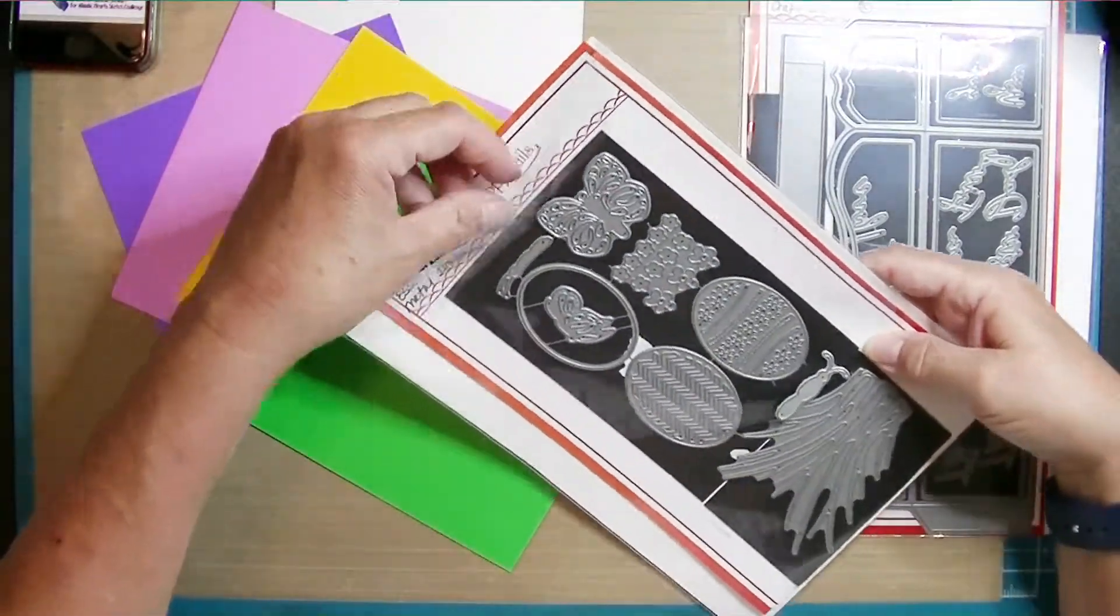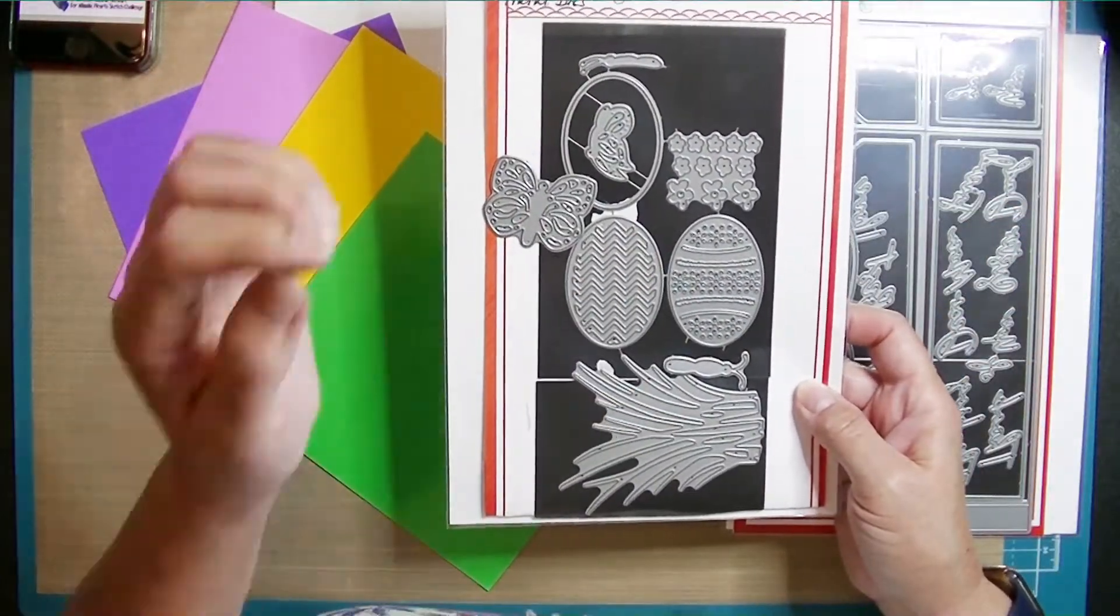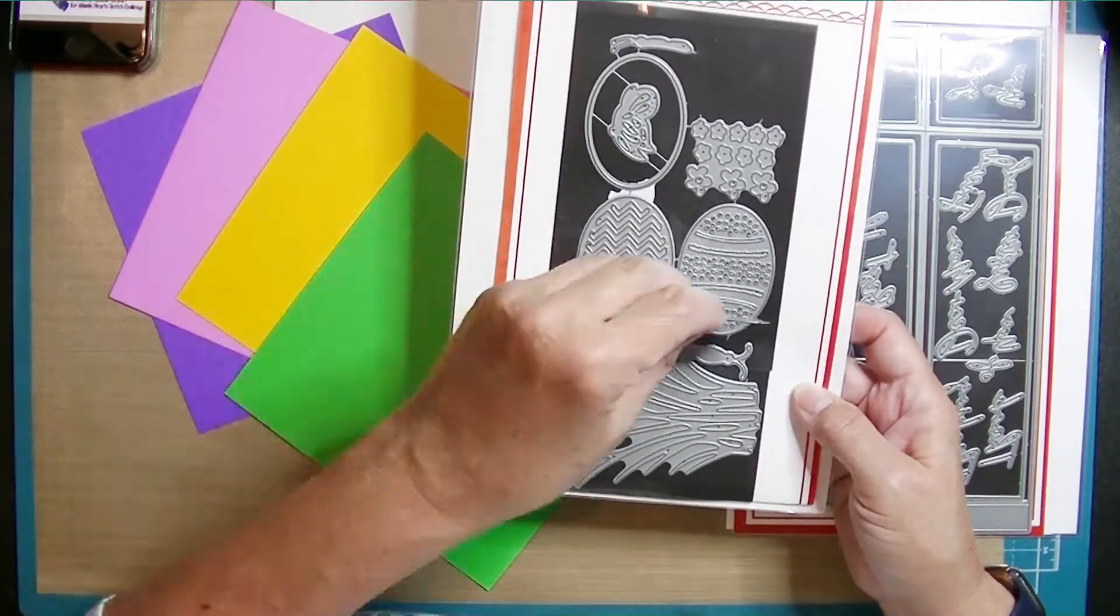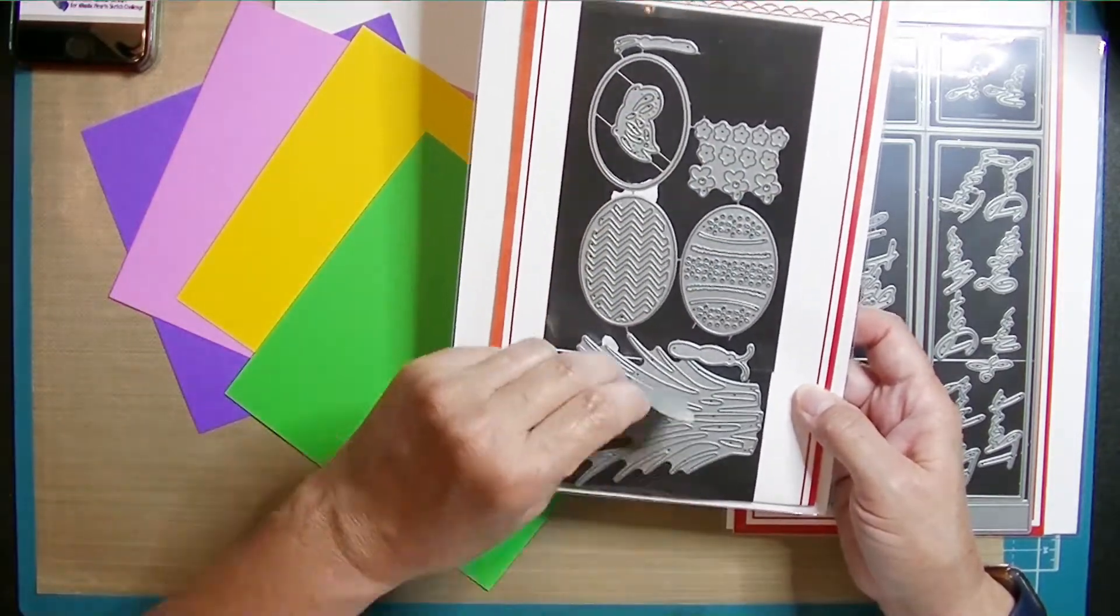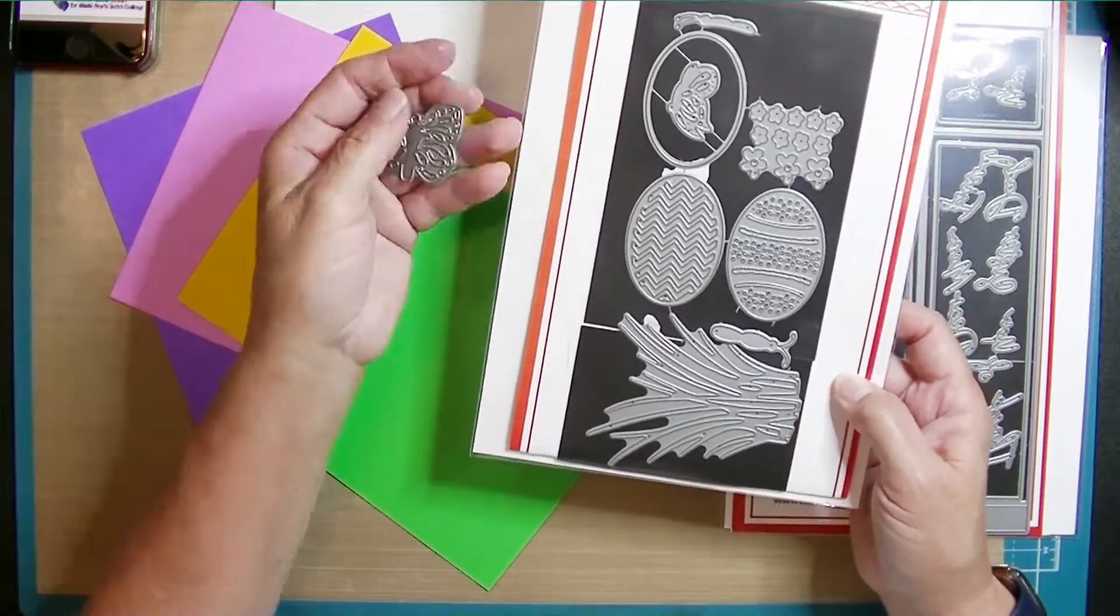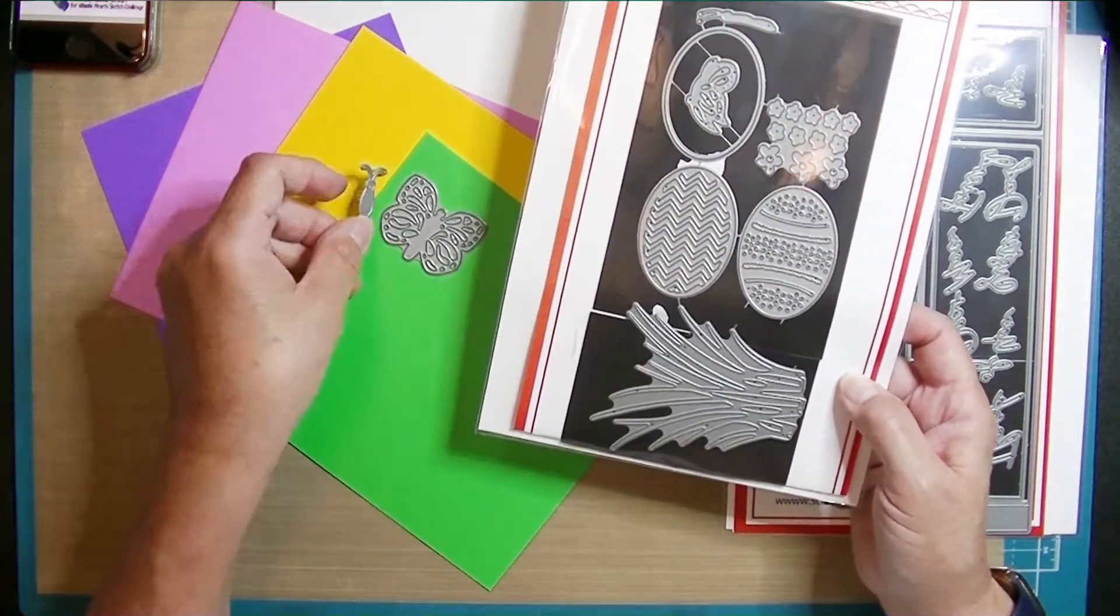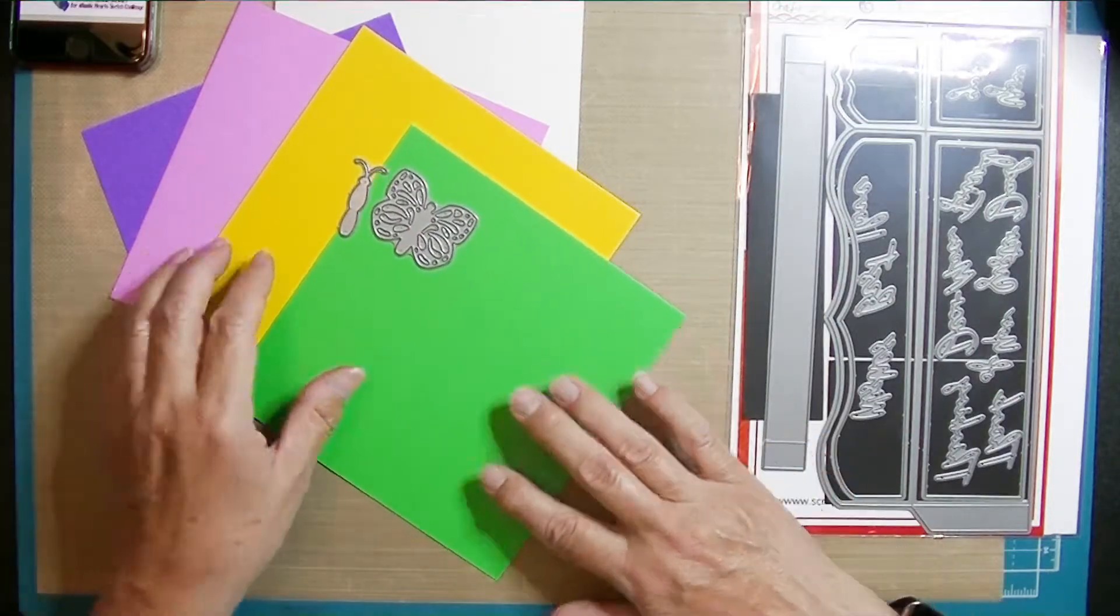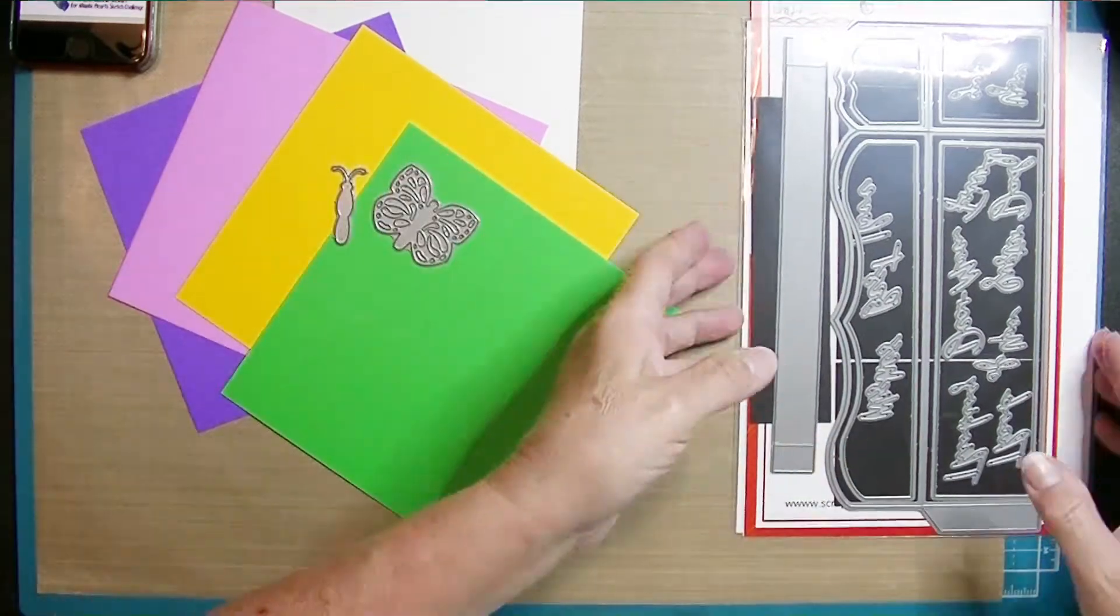And I'm going to use the Scrappy Tails Crafts Spring Essentials Metal Die Set. You can see that there are flowers, lots of greens, some eggs, and a couple of different butterfly images. So I'm going to pull out the larger butterfly image with the body of the butterfly.